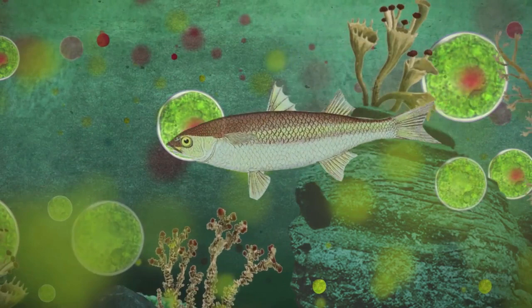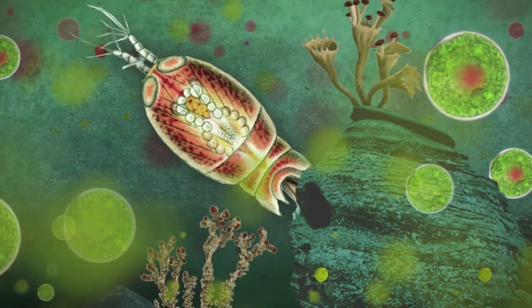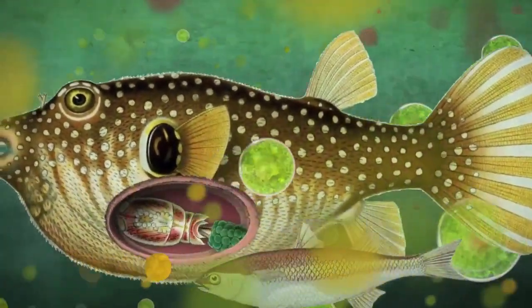That is because the plankton do not simply sink to the bottom of the sea, but are also ingested by other marine animals. And so the CO2 ends up in the atmosphere again via the food chain.